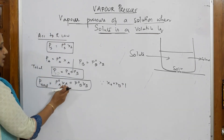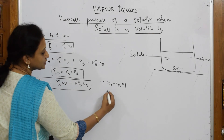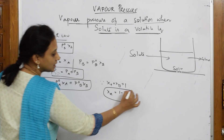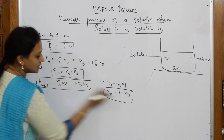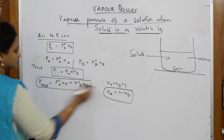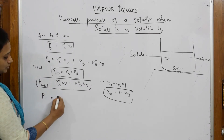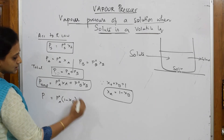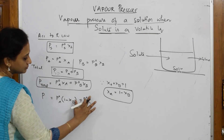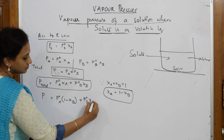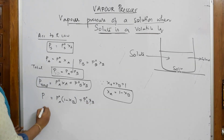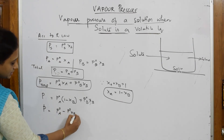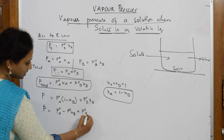Now, if I pick up XA, this becomes 1 minus XB. Wherever you have XA, I can substitute this value. So P = P0A·(1 − XB) + P0B·XB. Let us expand this: P = P0A − P0A·XB + P0B·XB. Now I am taking XB as common from the last two terms, giving P = P0A + XB·(P0B − P0A).